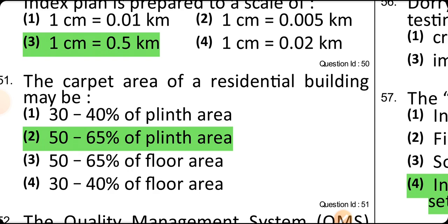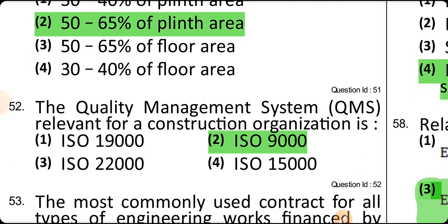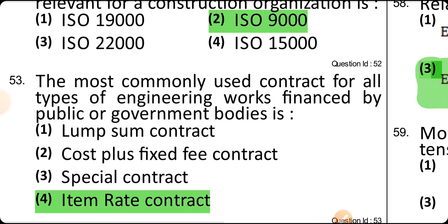The carpet area of a residential building is 50 to 65% of the plinth area. The quality management system relevant for construction organizations is ISO 9000. The most commonly used contract for all types of engineering work financed by a public or government body is an item rate contract.